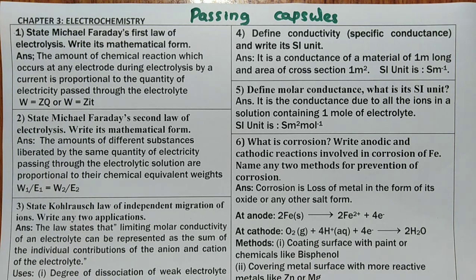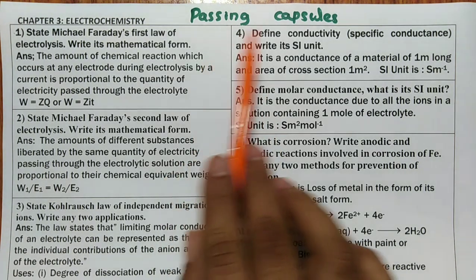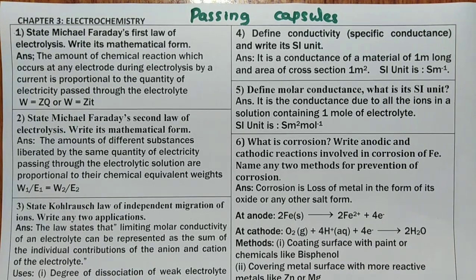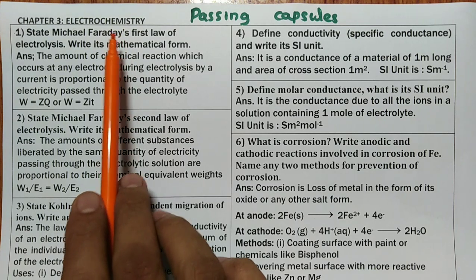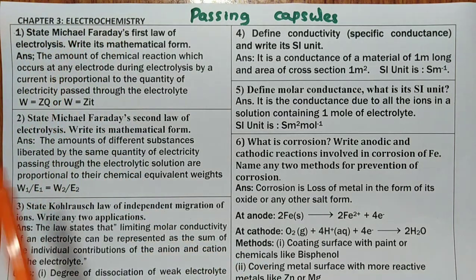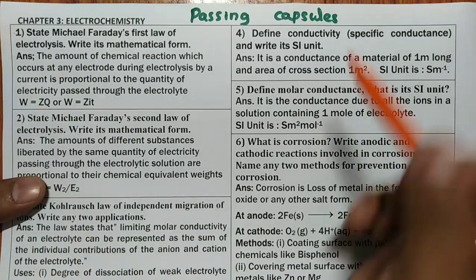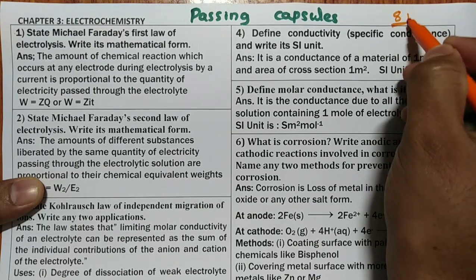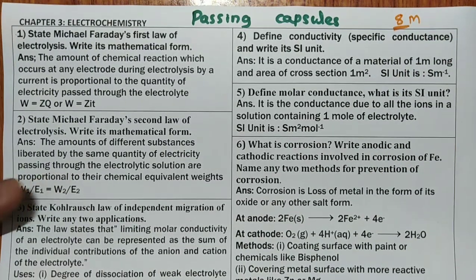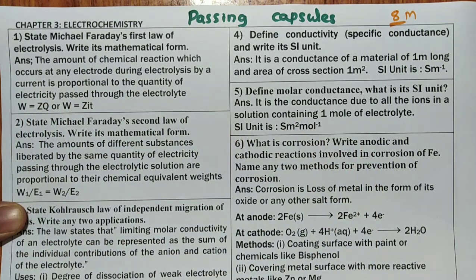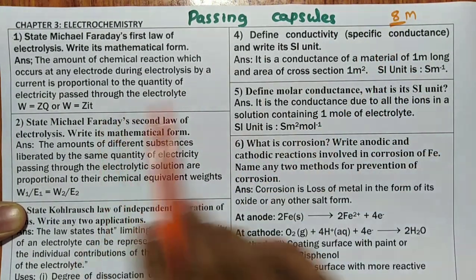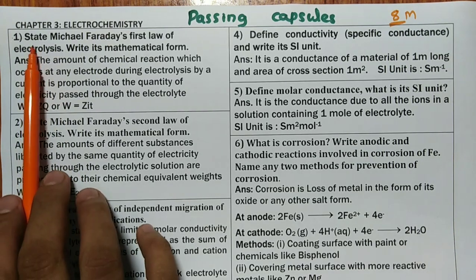Namaste students, welcome to RH Chemistry. In today's passing capsules for second PUC supplementary exam students in chemistry, I am going to discuss the last chapter — chapter 16, electrochemistry. I have already finished 15 chapters. Electrochemistry carries a maximum of eight marks, so get the first important question definitely to score perfect marks in the end.